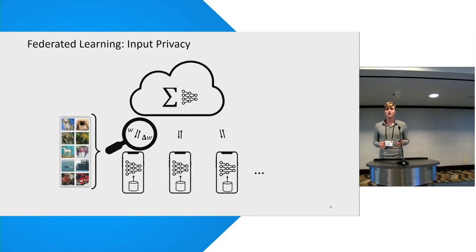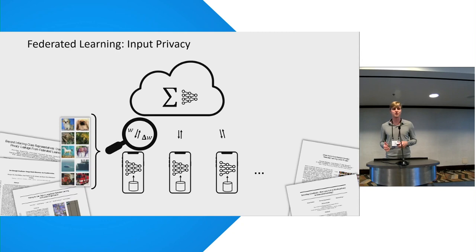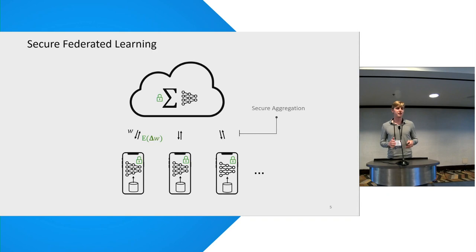Despite its novelty, federated learning is already being used in many applications. But federation by itself does not bring many privacy benefits, and the high-dimensional updates from clients actually still leak all sorts of information. It did not take much time until people came up with attacks that allowed the reconstruction of training examples from these updates. To remedy this, federated learning can be used in combination with secure aggregation, in which clients encrypt their local updates and the server can decrypt the final sum.